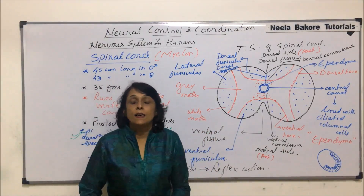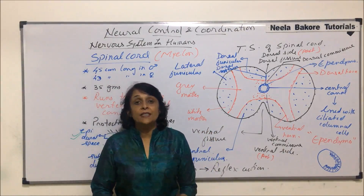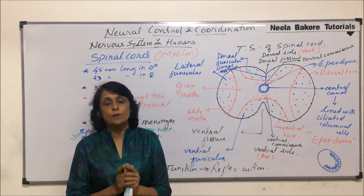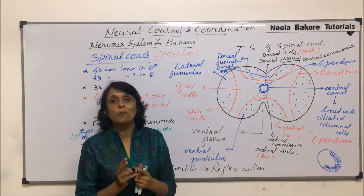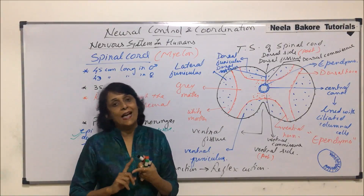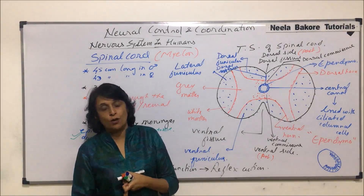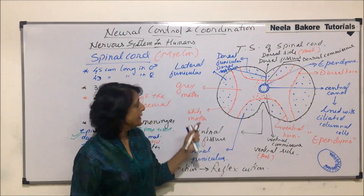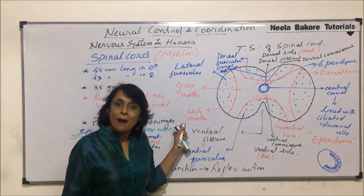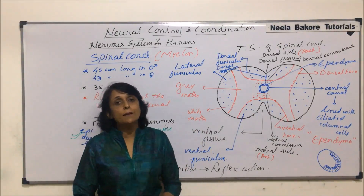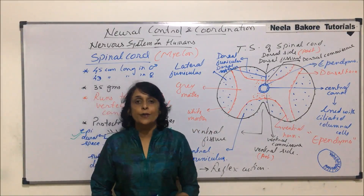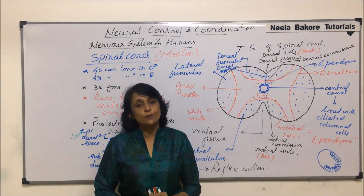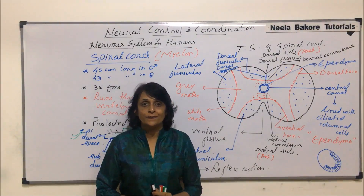With this we have completed the central nervous system. The central nervous system has two parts: the brain and the spinal cord. We have now understood all parts of the brain and spinal cord. In the next segment we will start with the peripheral nervous system, that is, about the nerves.